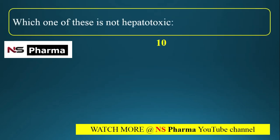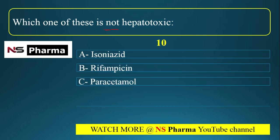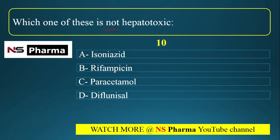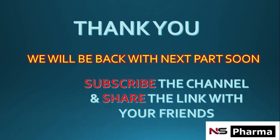Question 10: Which one of these is NOT hepatotoxic? Options: (a) isoniazid, (b) rifampicin, (c) paracetamol, (d) diflunisal. Options A, B, and C all cause hepatotoxicity. The correct answer is option D: diflunisal, which is an NSAID — a salicylic acid derivative — and is not hepatotoxic.